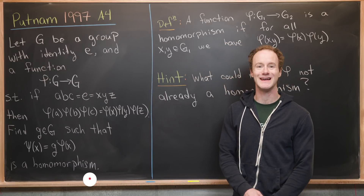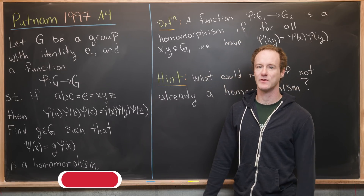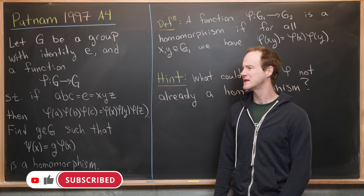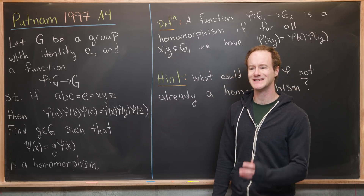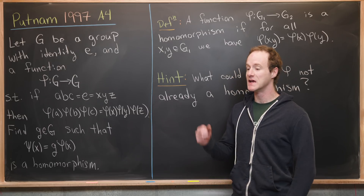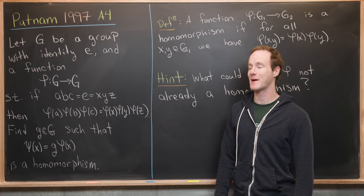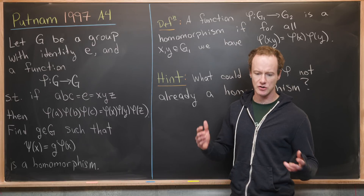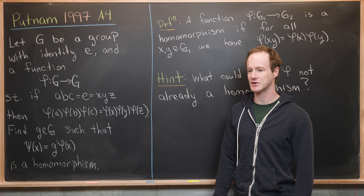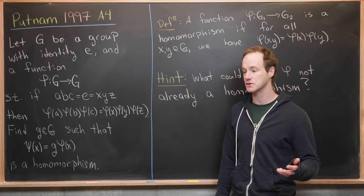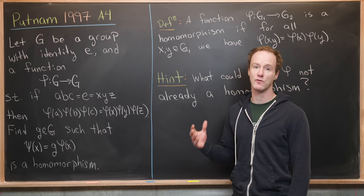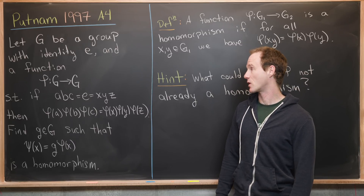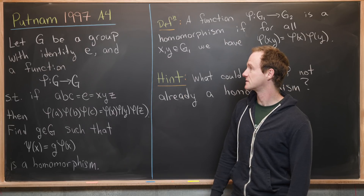Here we're going to look at a nice problem from the 1997 Putnam exam — question A4. What I think is most interesting about this question is it outright uses some notions from abstract algebra in the statement. Sometimes you can use the notions of a group or other ideas from abstract algebra in a solution, but it's very rare for those things to seep into the statement of the problem itself.